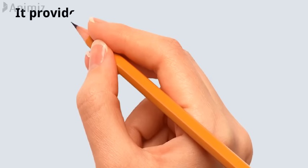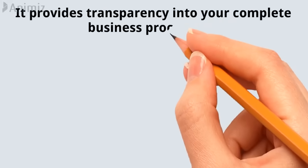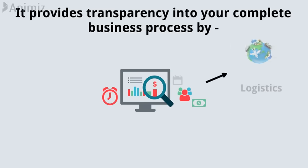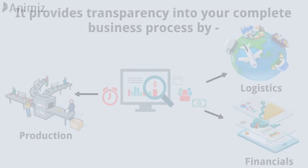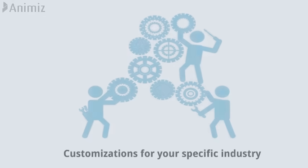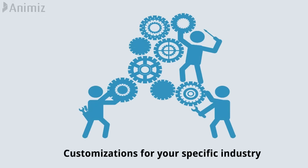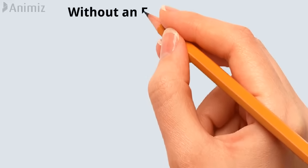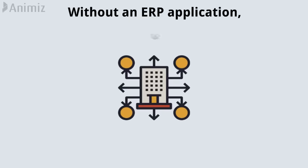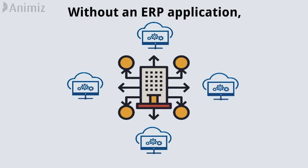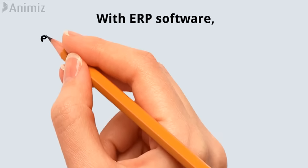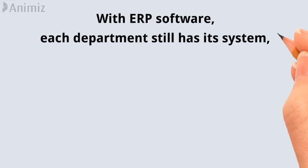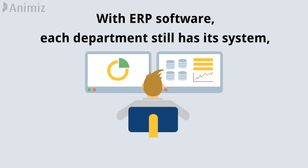It provides transparency into your complete business process by tracking all aspects of logistics, financials, and production. It also provides customizations for your specific industry. Without an ERP application, each department would have its own system optimized for its specific tasks. With ERP software, each department still has its system, but all systems can be accessed through one application with one interface.